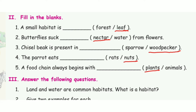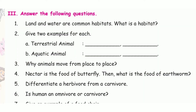Third question: chisel beak is present in ___. Sparrow or woodpecker? The answer is woodpecker. Fourth question: the parrot is ___. Rats or nuts? The answer is nuts. Fifth question: a food chain always begins with ___. Plants or animals? The answer is plants.